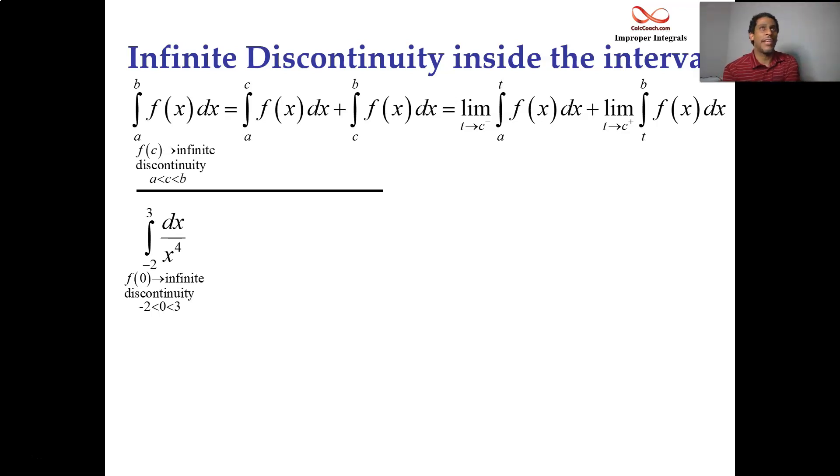You see, if the integral went from 1 to 3, yeah, the previous class, but because the integral goes from negative 2 to 3, that covers up 0. And look at the denominator, it is 0 when x is 0. And so we break this into two separate integrals, we go from negative 2 to 0, and then we go from 0 to 3.